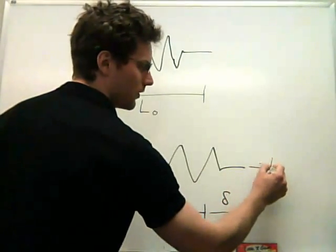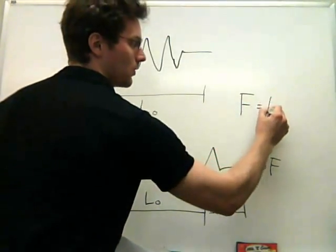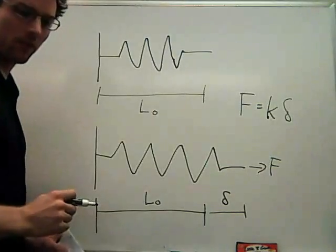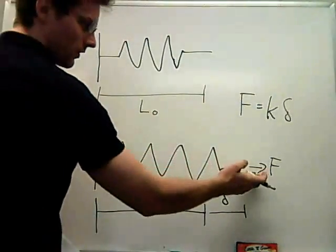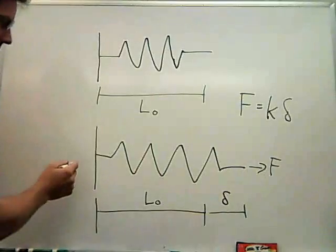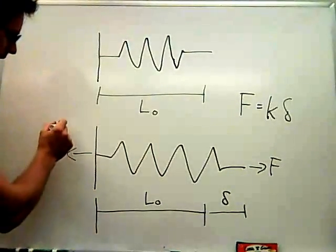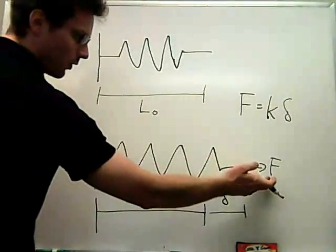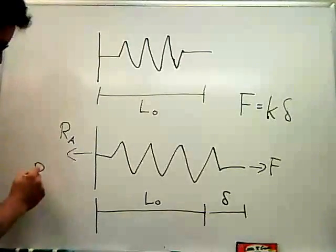And we know that for a spring, the force required to pull this is equal to the spring constant times the displacement delta, so F equals K delta. If there's a force applied here, then there's also an equal and opposite reaction by Newton's third law, so there's some reaction here we'll call RA.